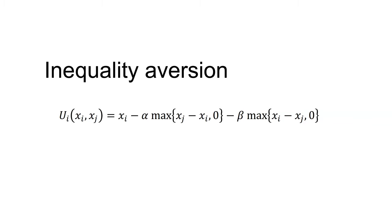The three terms in this function represent: first, the utility of their own outcome XI; second, their dislike of having less than the other agent, where alpha is greater than zero; and third, their dislike of having more than the other agent, where beta is greater than zero. Typically, alpha is greater than beta, as people dislike having less than others more than they dislike having more than others.